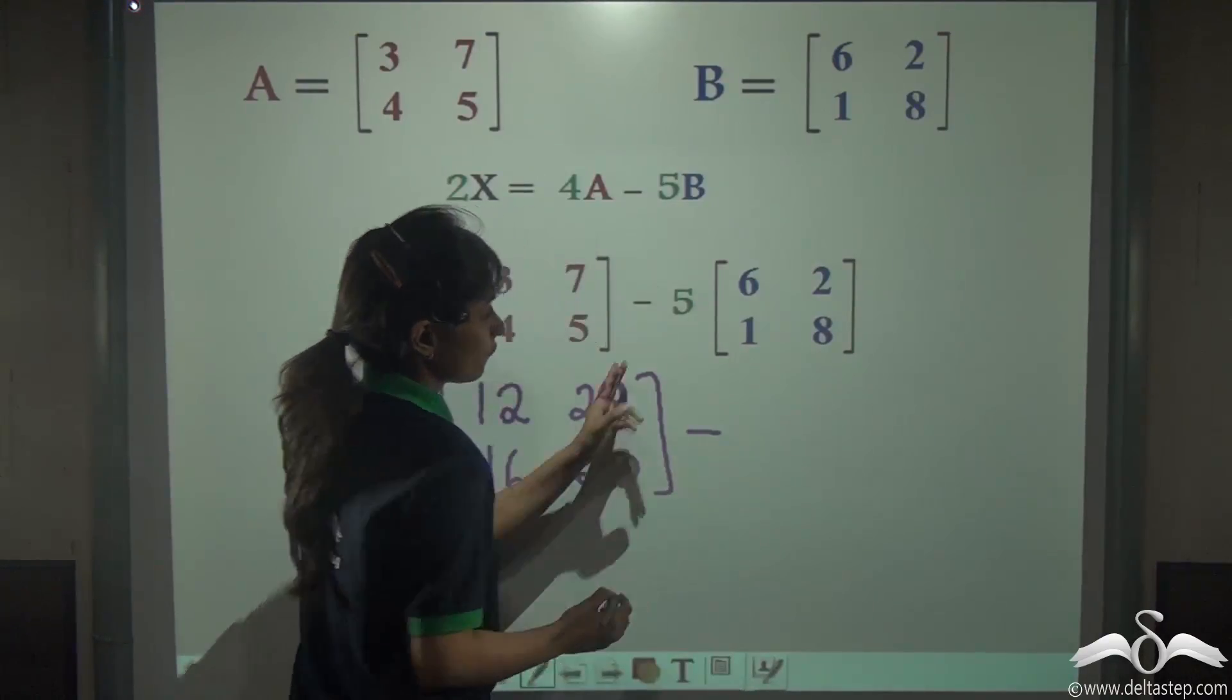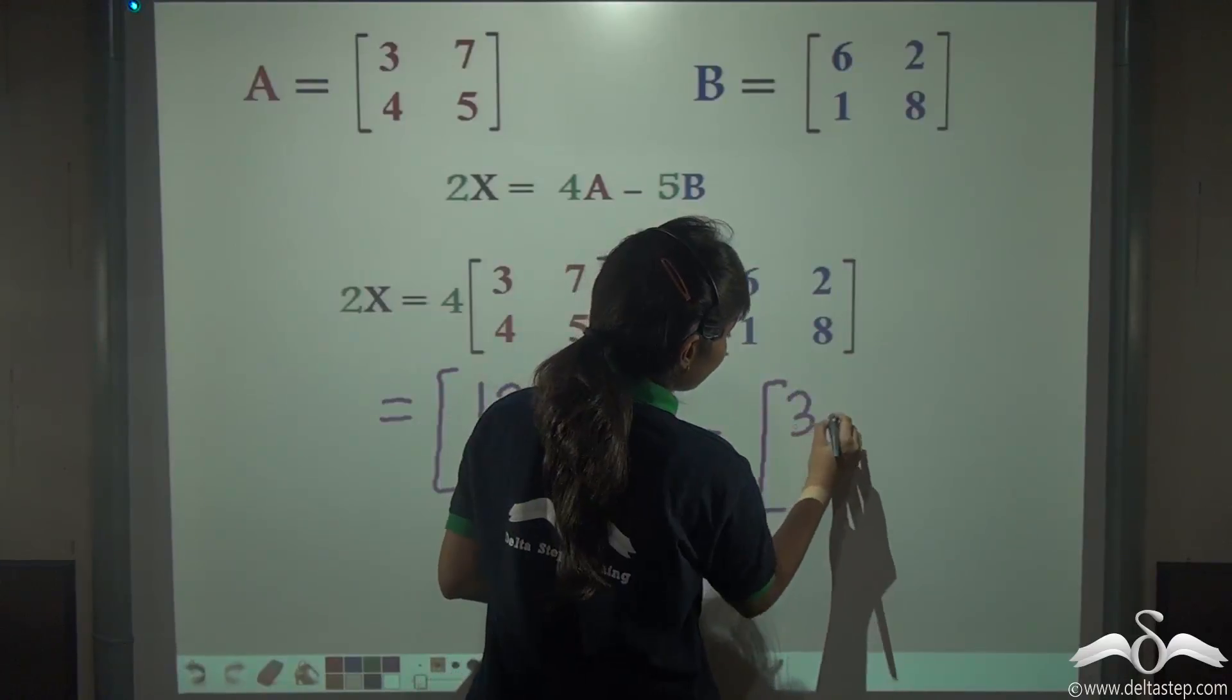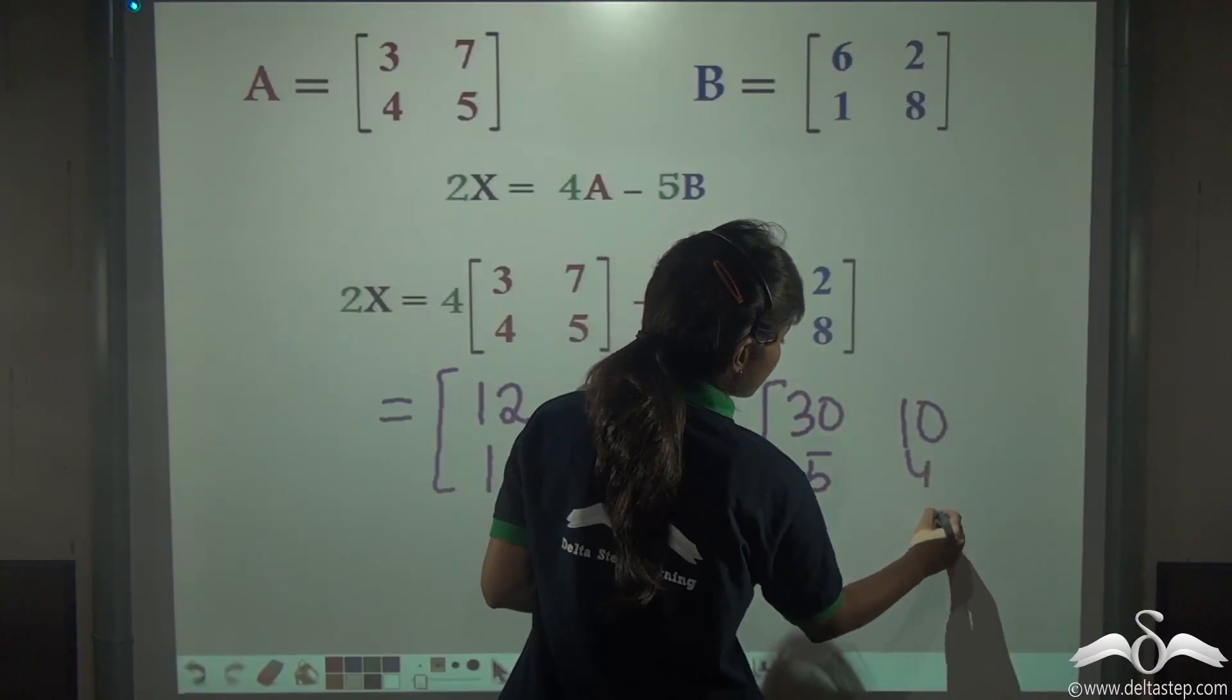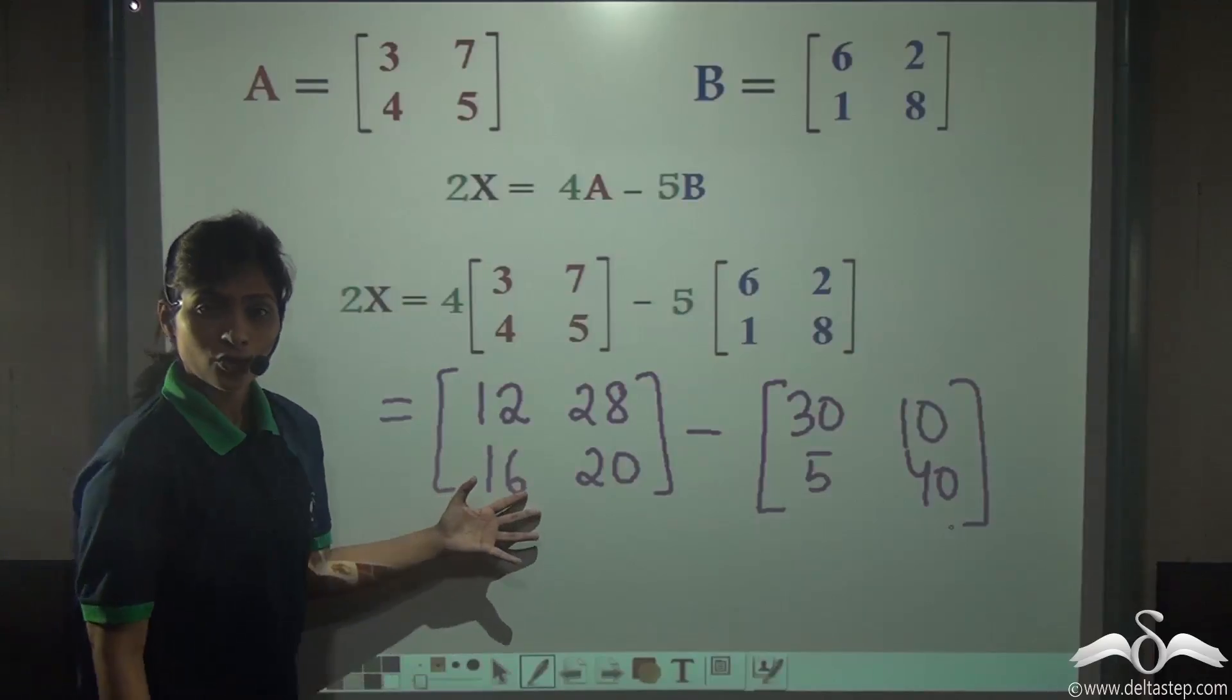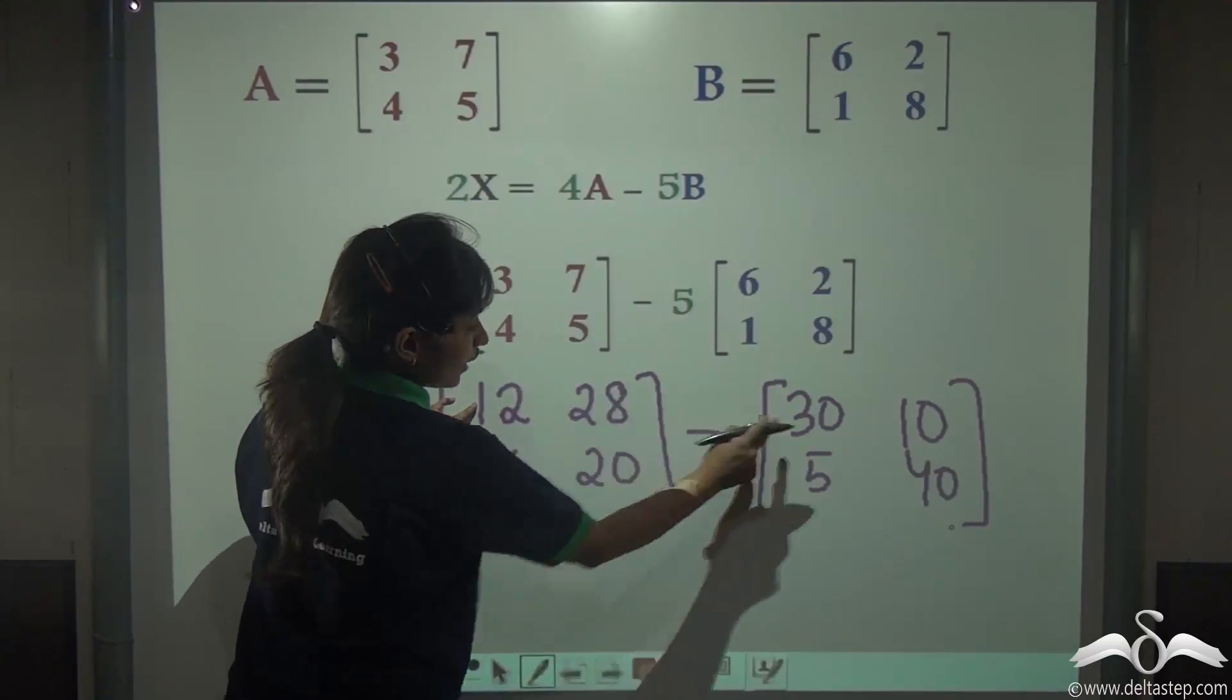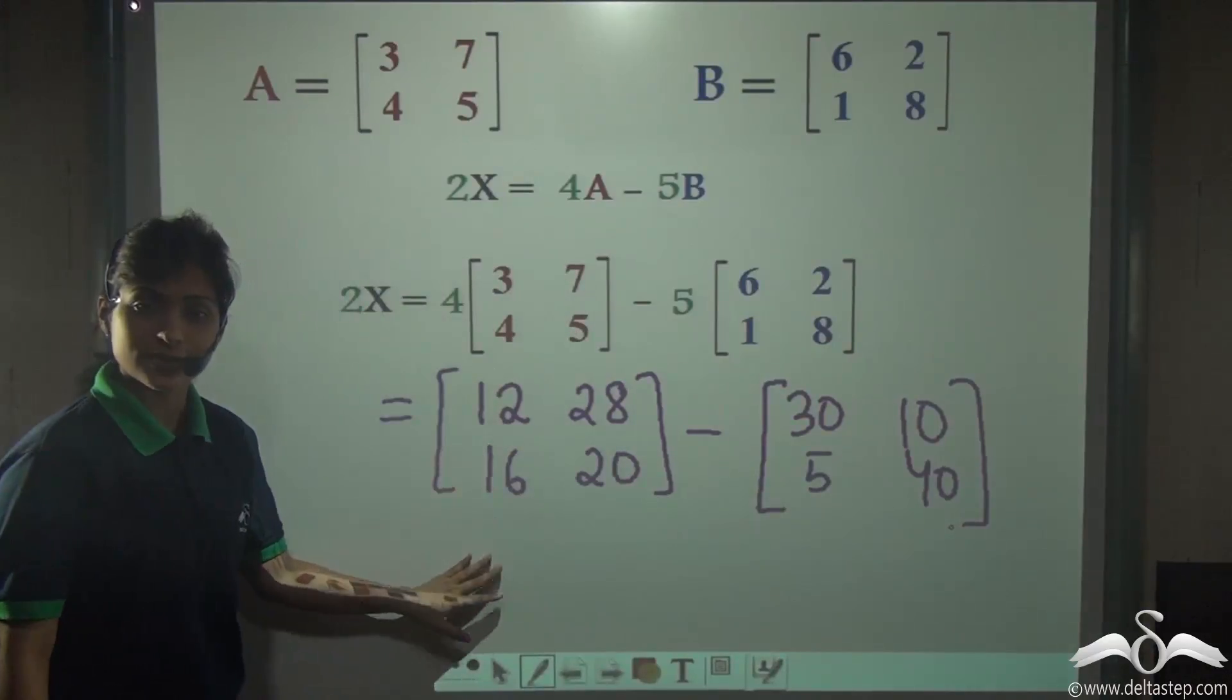Now we will do the same with this. Multiply 5 with all the entries: 5 into 6 is 30, 5 into 2 is 10, 5 into 1 is 5, and 5 into 8 is 40. Now you have already learnt how to subtract two matrices. Simply with the corresponding entries, we will subtract: 12 minus 30, 28 minus 10, 16 minus 5, and 20 minus 40.